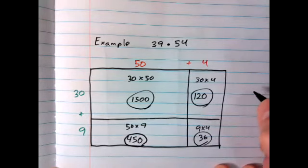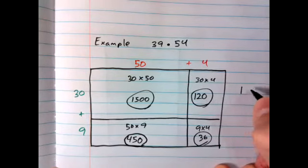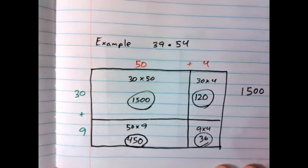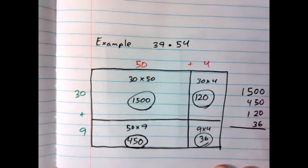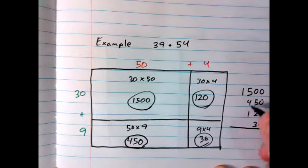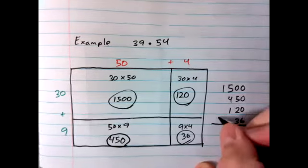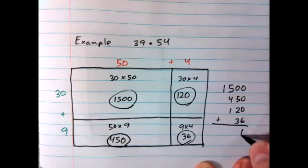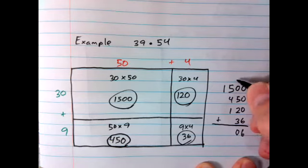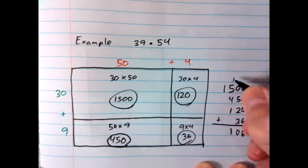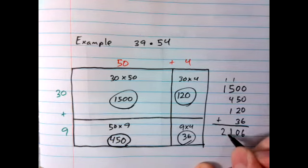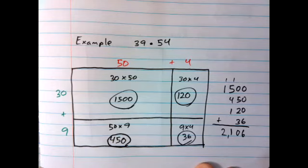You can do this least to greatest. I just prefer greatest to least. That gives me the most organization. Remember, keep your columns organized when you're adding up at the end. 6, 10. 1 and 4 makes 5, and 5 is 10. One more, 11. So now I have 2,106 as my answer.